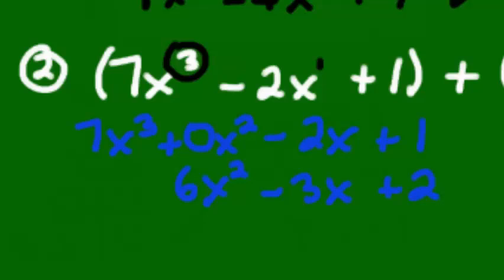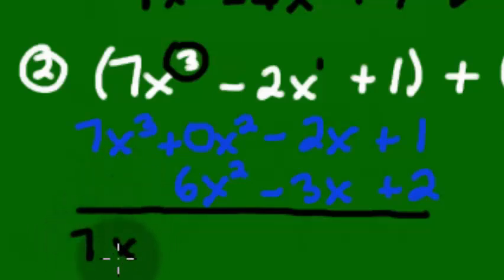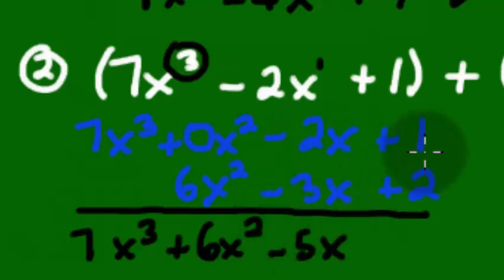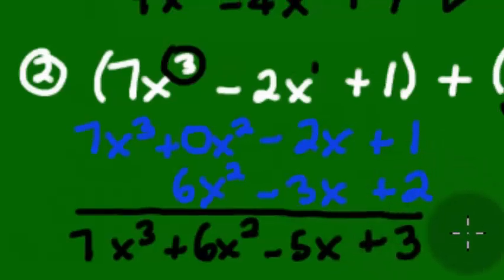All right, so once you do that, once you align everything, you're very careful on that portion or that type of problem, you're now going to add like terms. So 7 plus nothing is 7. We have 7x cubed. 0 plus 6 is 6x squared. Let's see, minus 2 and minus 3, that makes minus 5. And then 1 plus 2 makes 3. And that's our solution.